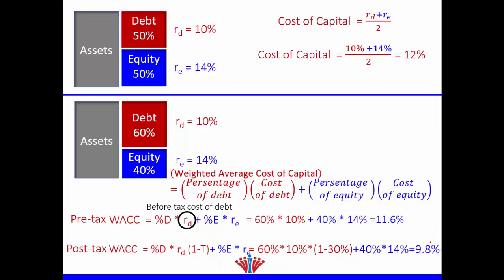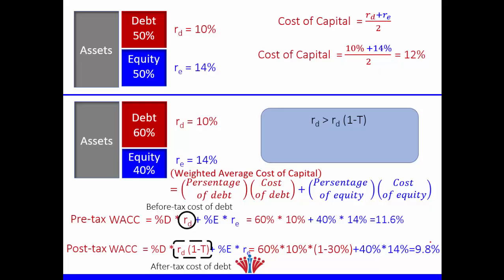When we talk about pre-tax WACC, the cost of debt Rd is called the before-tax or pre-tax cost of debt. When we multiply the cost of debt by (1 − tax rate), it becomes the after-tax cost of debt, because it now reflects the tax shield. For pre-tax WACC we use before-tax cost of debt; for post-tax WACC we use after-tax cost of debt. The before-tax cost of debt is always larger than the after-tax cost of debt because we multiply by (1 − t). They are equal only when there are no taxes.